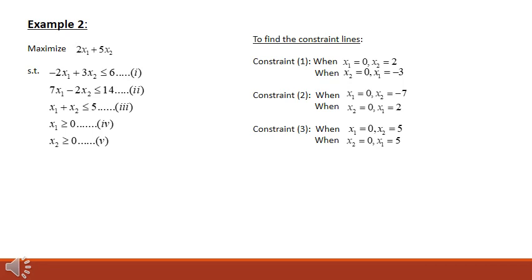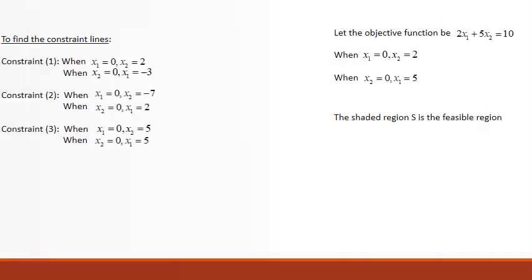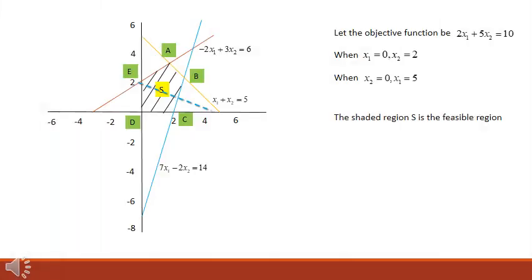Let us look at another example. We have to maximize 2x₁ plus 5x₂ subject to 3 inequality constraints and 2 non-negativity constraints. Again, first we find the constraint lines by computing the horizontal and vertical intercepts, then plot the constraint lines.